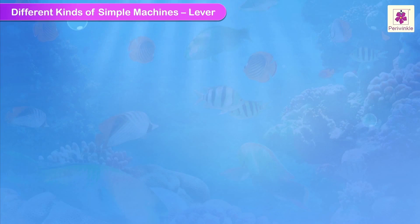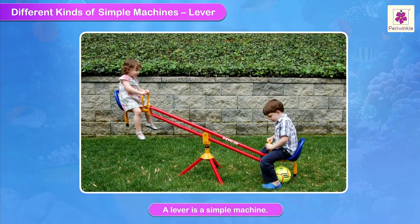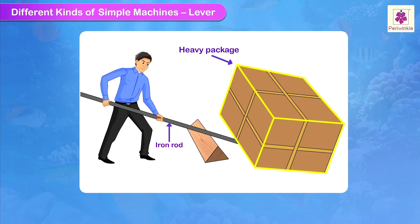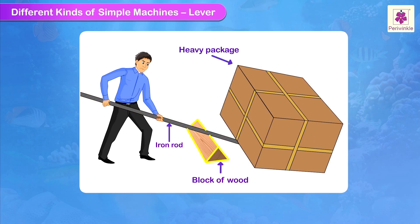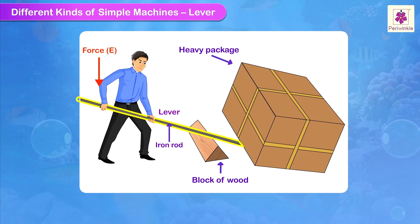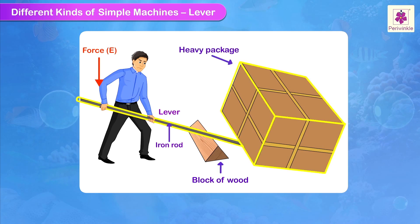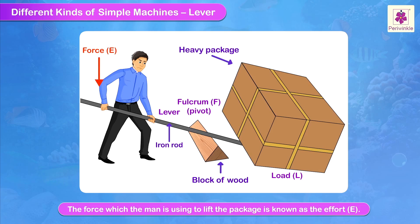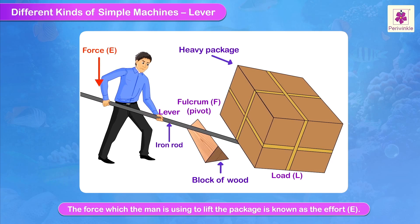Lever. A lever is a simple machine. The man is using an iron rod to lift a heavy package. He has placed a block of wood close to the package and is resting the rod on it. He applies a downward force and thus is able to lift the package. Here the iron rod is the lever, the package to be lifted is the load, the wooden block is the fulcrum — also called a pivot — which is the fixed point of the lever. The force which the man uses to lift the package is known as the effort.